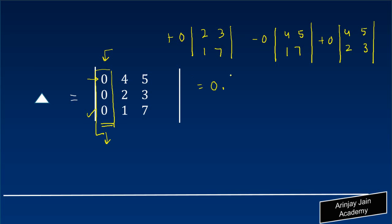We end up with zero times (7 times 2 gives 14 minus 3), zero times 11, minus zero times (28 minus 5), minus zero times 23, plus zero times (12 minus 10), plus zero times 2. The value of all these three is zero minus zero plus zero, which ultimately is zero.